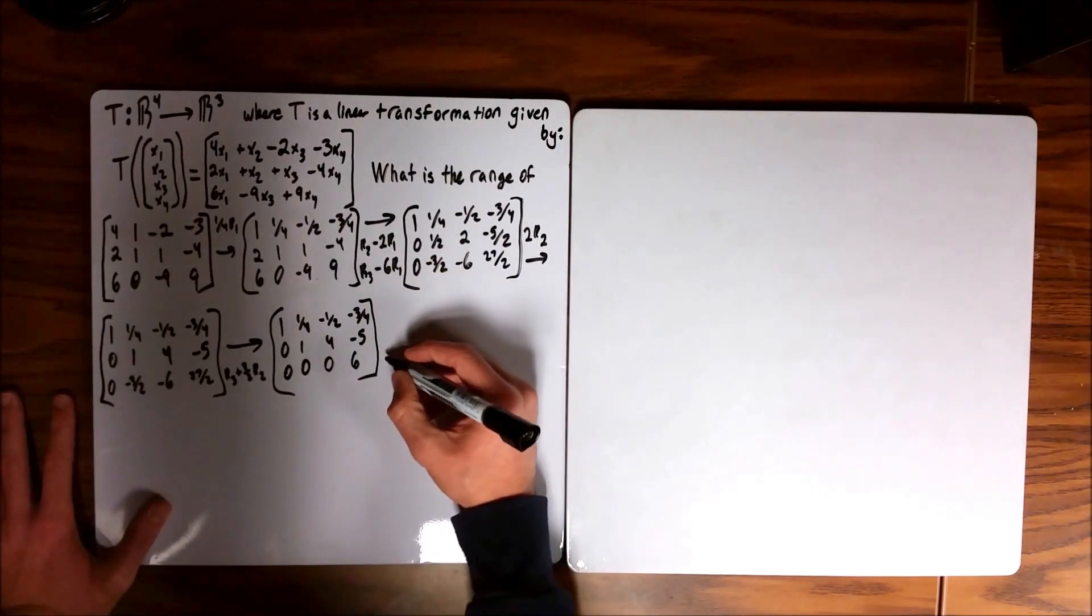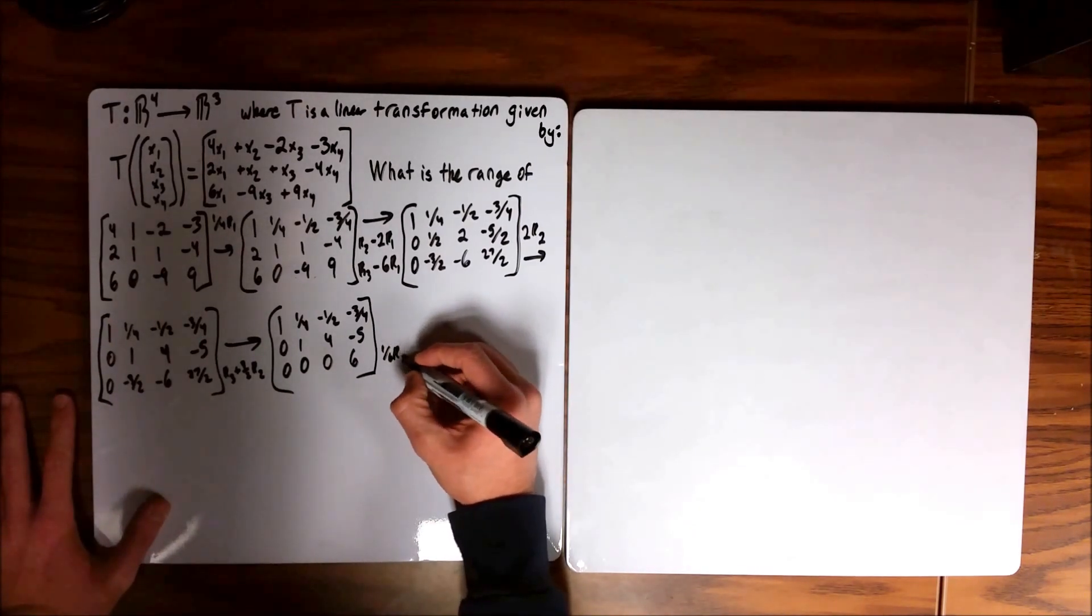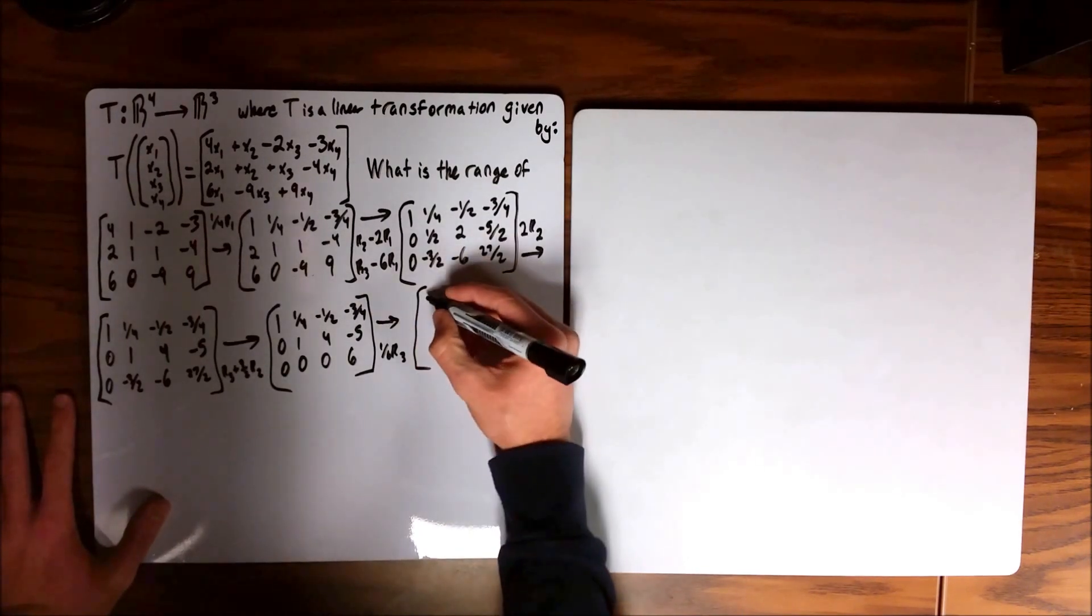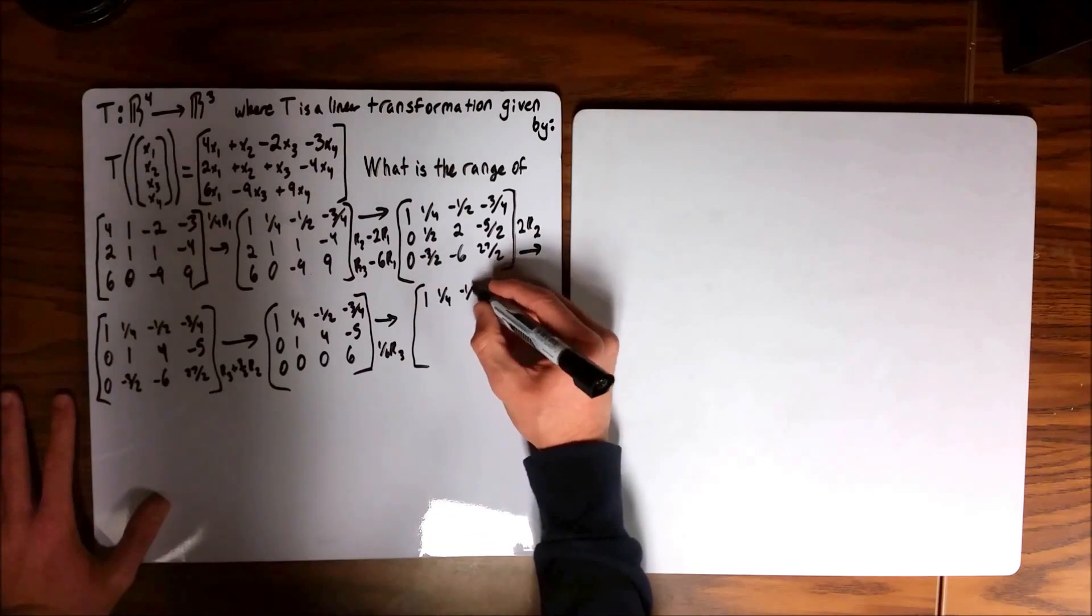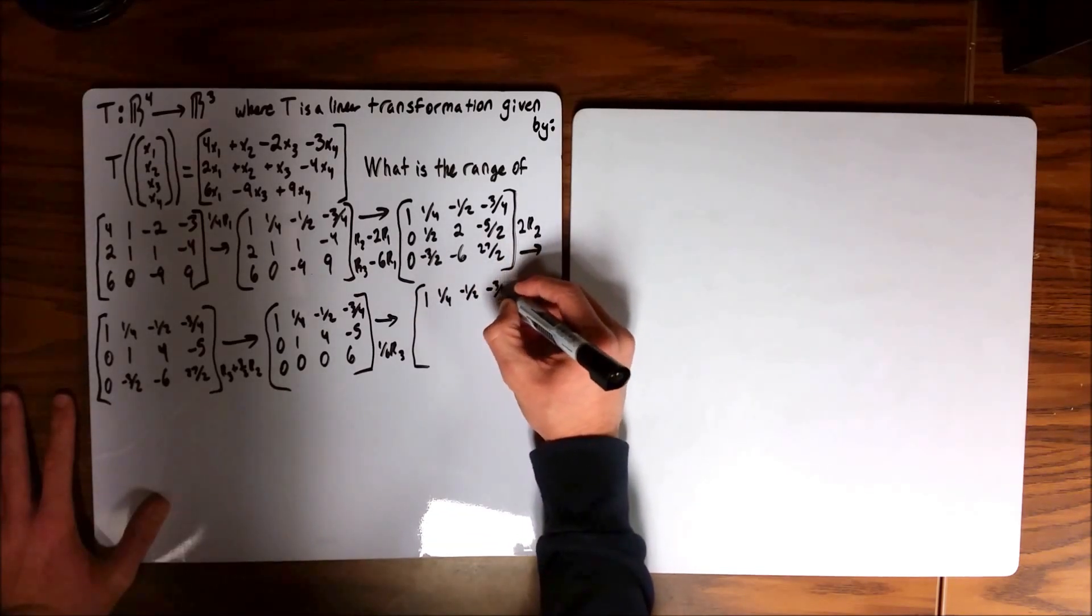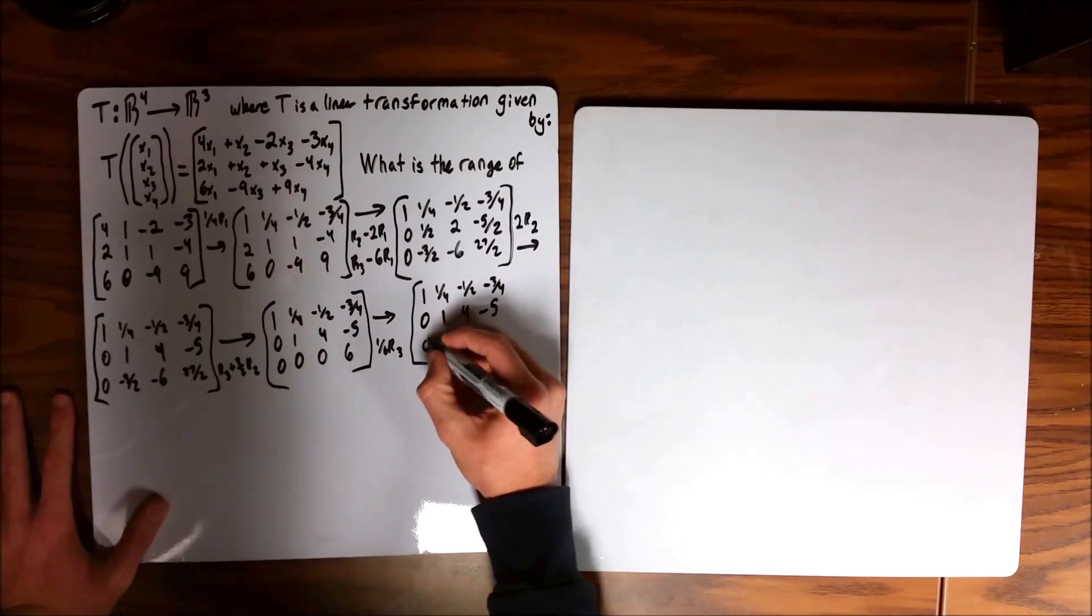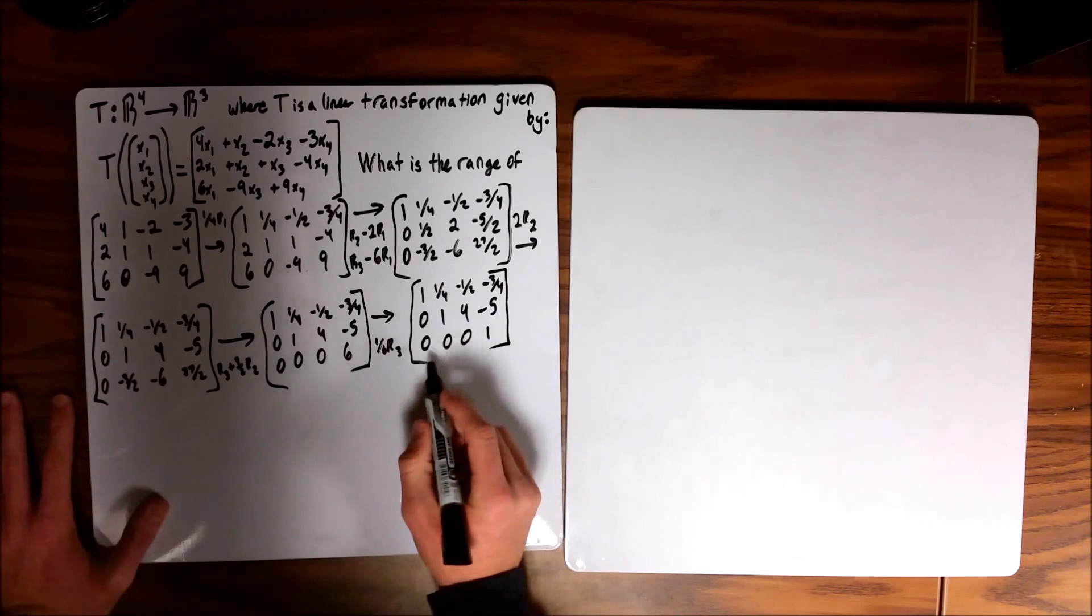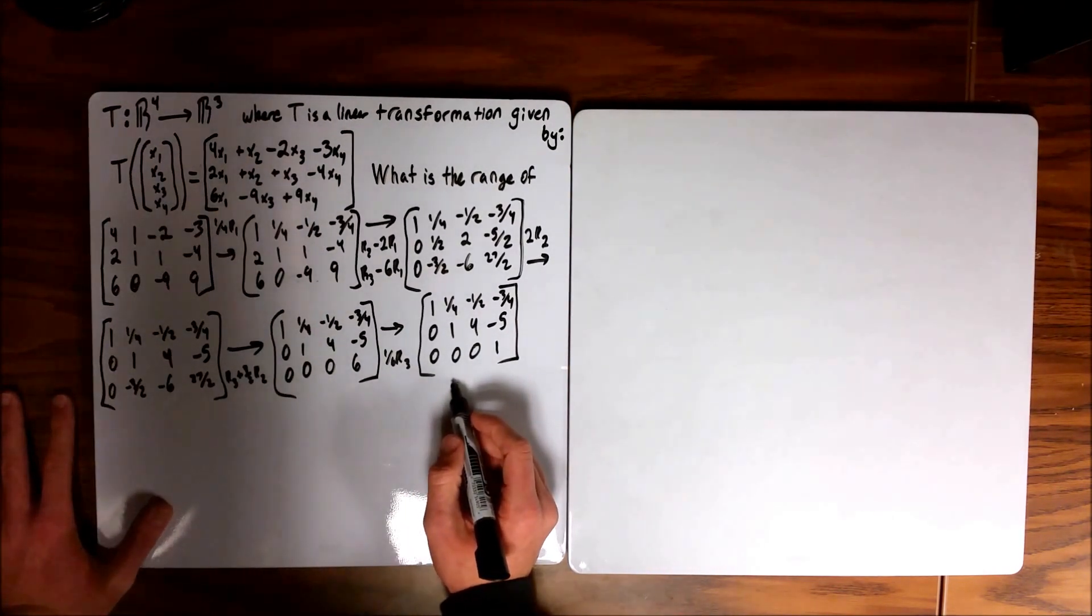And so all we have to do now to get it into row echelon form is 1 sixth of R3, just for the sake of illustrating that it is indeed in row echelon form, even though that might be obvious. And so this is the row reduced form of our matrix A.